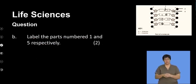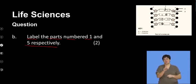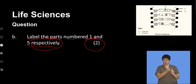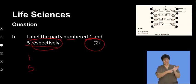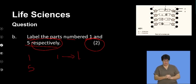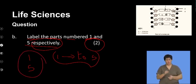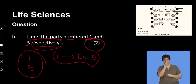The next question asks us to label the parts numbered one and five respectively. It's important that you look at the question and mark allocation — it requires that we label parts one and five only, not one through five. Labeling all five parts would mean spending extra time on questions that were not necessary.